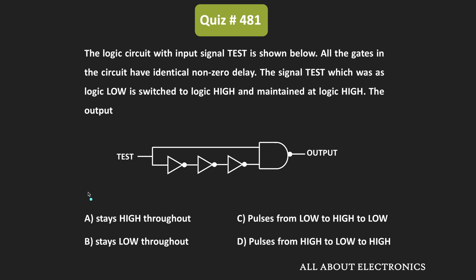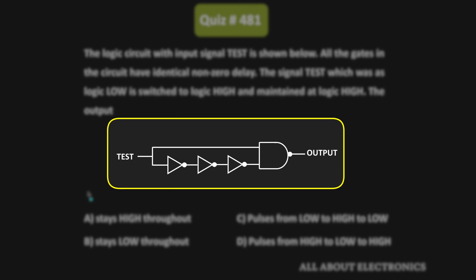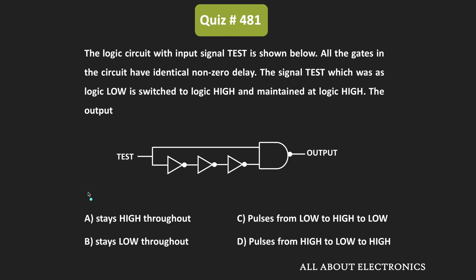In this question, we have been given this logic circuit. In this circuit, the stage signal is applied as an input. We have been given that all the gates in the logic circuit have identical non-zero delay. Initially, the stage signal is low, and at time t=0, the stage signal goes from logic low to logic high.